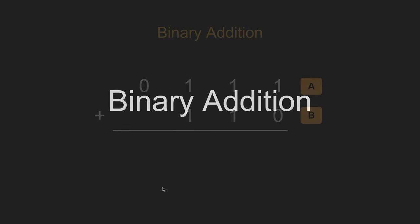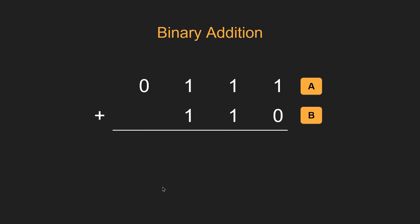Binary addition works in exactly the same way, except that we only ever have to add up to 3 as a maximum. So let's start on the right hand side. We've got 1 plus 0, well that makes 1. And in binary, 1 is 1, so we don't need to do anything. Then we move on to the next column.